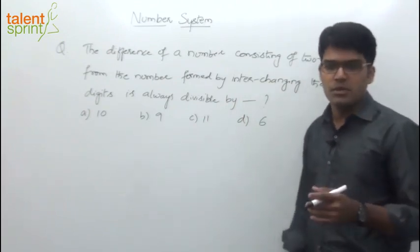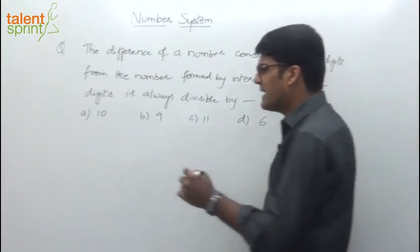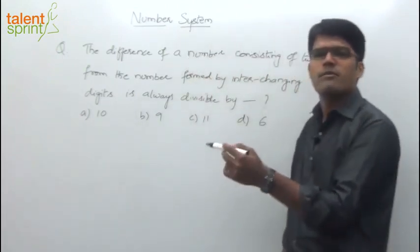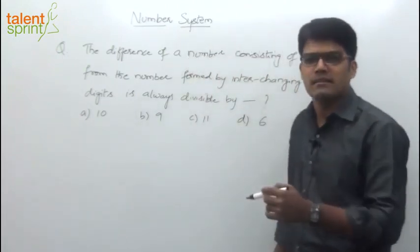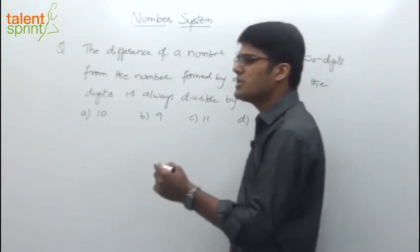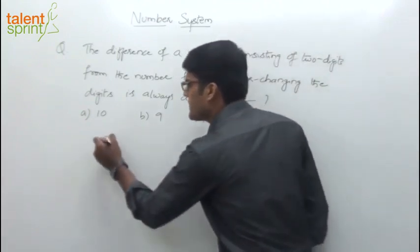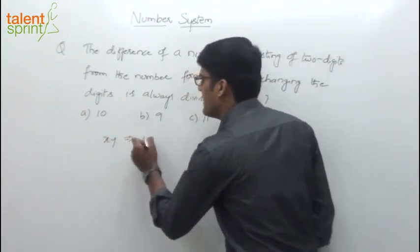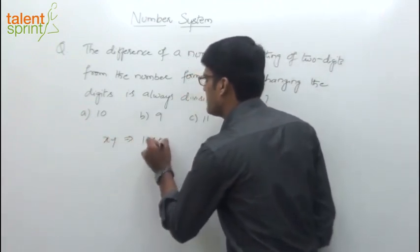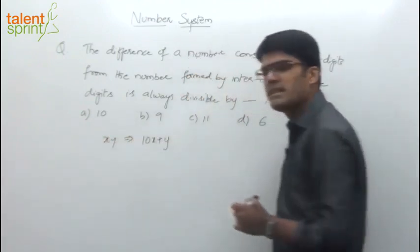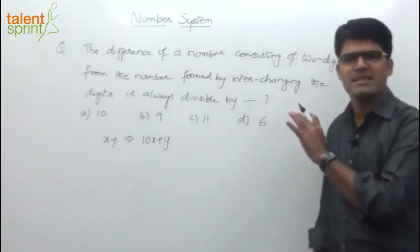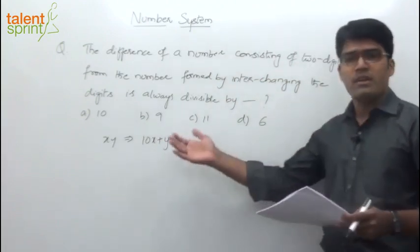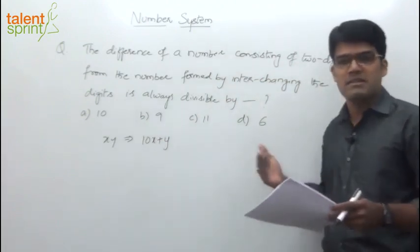We have learned that any two-digit number, we generally express it in the form of 10x plus y. Let's say there is a two-digit number xy — how do we represent this? 10x plus y, in the decimal form. You know that we follow the decimal number system.